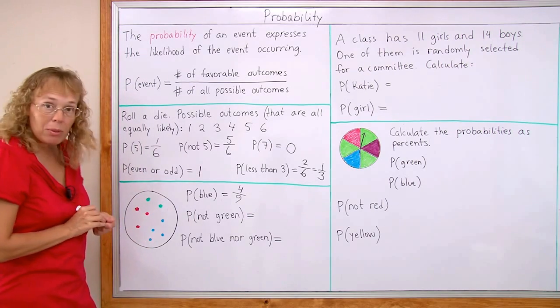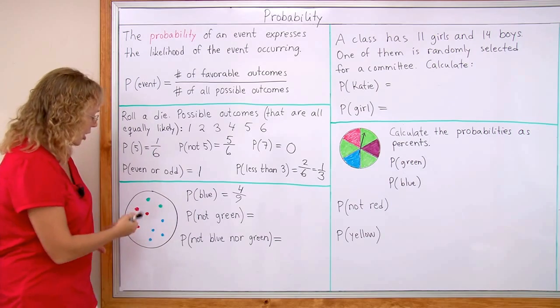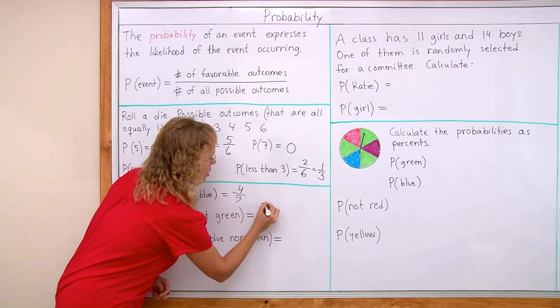Then the probability of picking a marble randomly and not getting a green one. We just count how many are not green. That's seven and still nine in total.